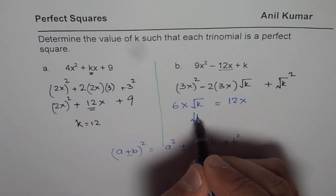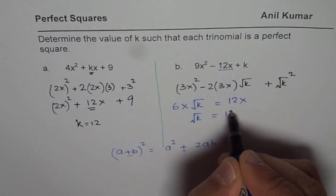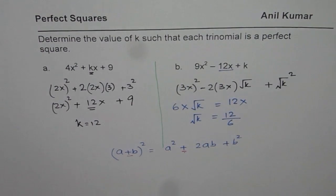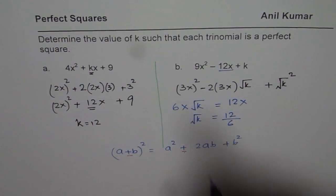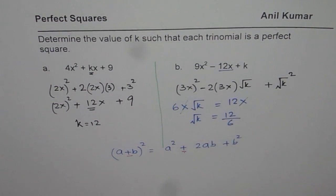√k should be equal to 12 divided by 6. x and x cancel out, correct?